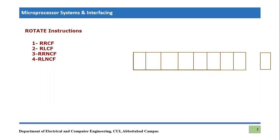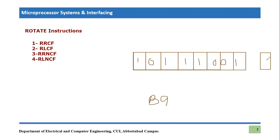Let's consider some data already stored inside. The data is 1, 0, 1, 1, 1, 0, 0, 1. So some 8-bit information is stored. If we convert it into hexadecimal, 1011 becomes B and 1001 is 9. So the data of this file register location is basically B9 in hexadecimal. And this is the carry flag — before applying any instruction, we have a carry flag which is equal to 0.